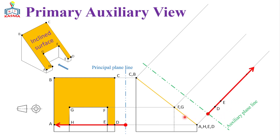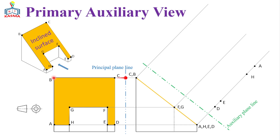We can transfer this dimension from the reference of the auxiliary plane line. Since we have four points here, from here to here it will be point D, from here to here it will be point E, from here to here it will be point H, and from here to here it will be point A. All those points can be located in this way. We can then measure the distance from this reference to the other points, B and C, measure that distance, and transfer that dimension so that points B and C can be located at their specific locations.